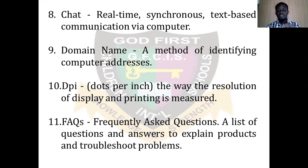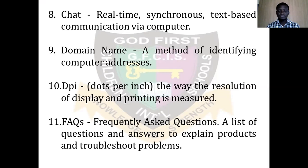We also have DPI — dots per inch. This is the way the resolution of display and printing is measured. Your printer or computer screen resolution is measured in DPI. The smaller the dots, the better the quality of picture and the better the output you will have on your screen. Likewise, printer quality is also measured in DPI — dots per inch.